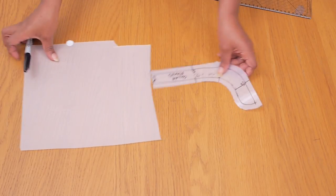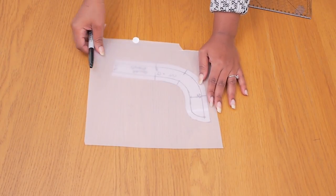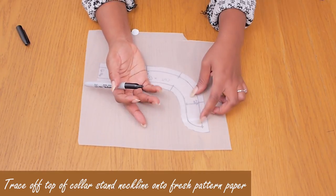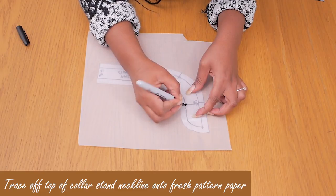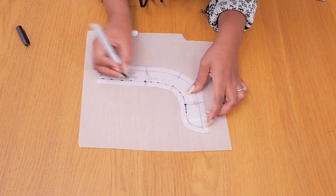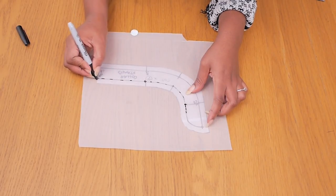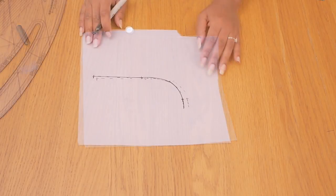But next up I'm going to be working on the collar itself and I will be needing my collar stand to do so. So I've grabbed my collar stand and some fresh pattern paper and I'm just tracing along the seam line, tracing the neckline, transferring my notches as well as my center back point and I'm going to be drawing in the shape of the collar that I want.